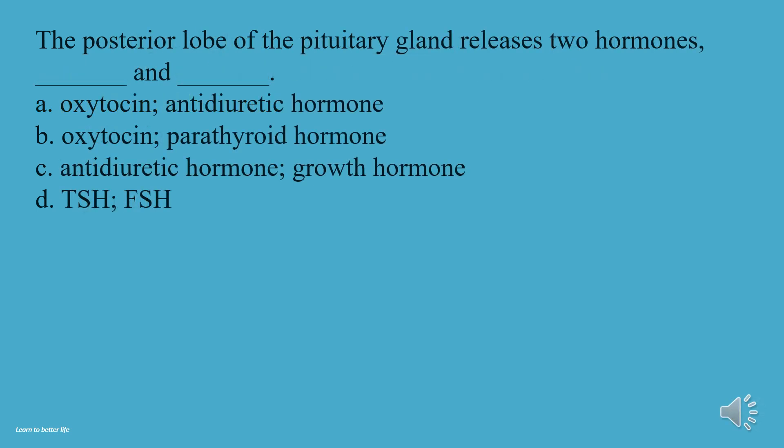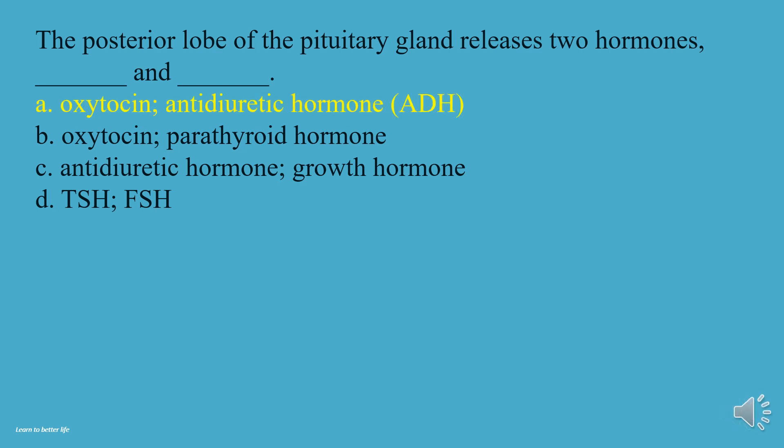The posterior lobe of the pituitary gland releases two hormones. What are they? A, Oxytocin and antidiuretic hormone. B, Oxytocin and parathyroid hormone. C, Antidiuretic hormone and growth hormone. D, TSH and FSH. The answer is A, Oxytocin and antidiuretic hormone (ADH).